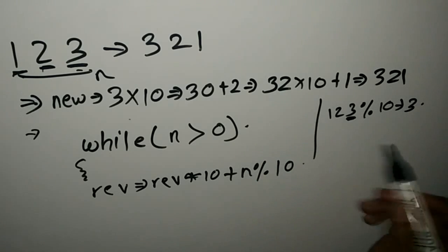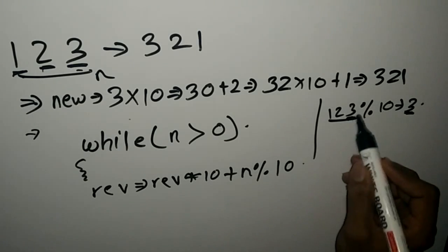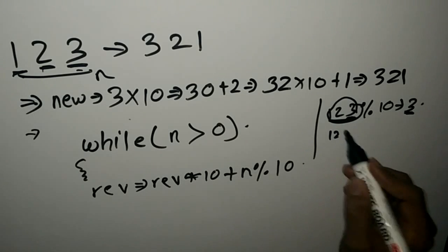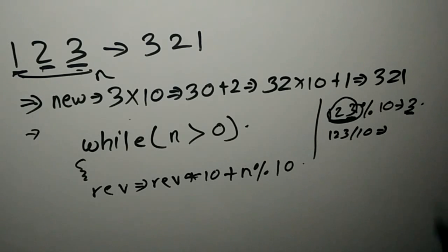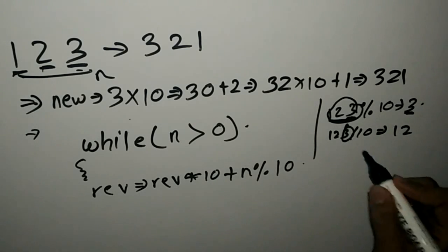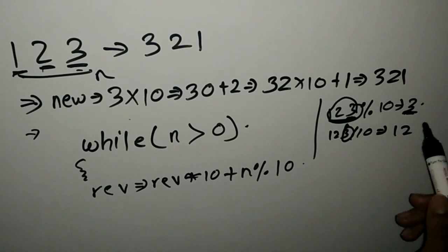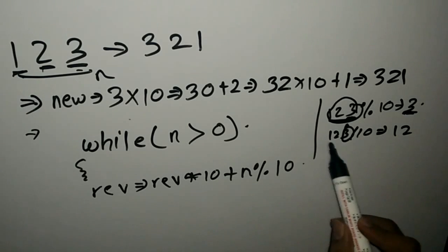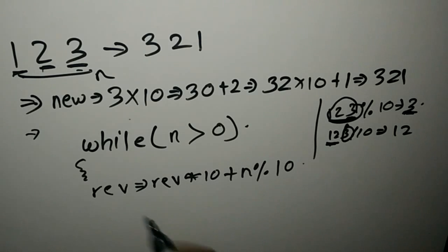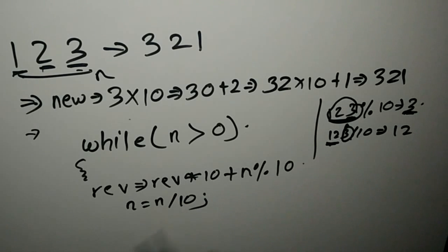In each case, once we get the units place digit, we then divide the number 123 by 10. Since this is integer-by-integer division, the answer will be 12. So we have eliminated the digit 3 because it's already been stored in reverse. Now the number only becomes 12. So in each loop iteration, we divide: n is equal to n divided by 10.